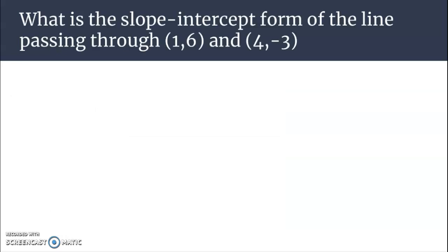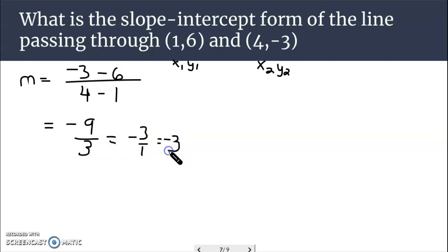A couple more problems here. What's the slope-intercept form of the line passing through (1, 6) and (4, -3)? Alright. First, let's find the slope of this line. y2 minus y1 over x2 minus x1. Here's our x1, y1. Here's our x2, y2. Negative 3 minus 6, all over 4 minus 1. Negative 3 minus 6 is a negative 9. 4 minus 1 is 3. That simplifies to negative 3 over 1, also known as just negative 3.